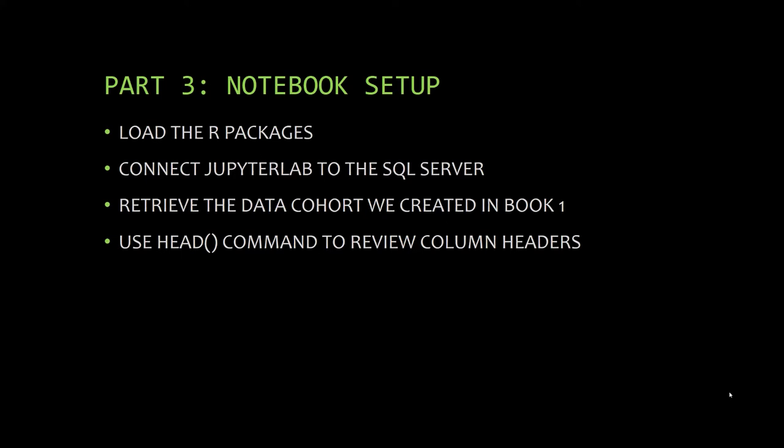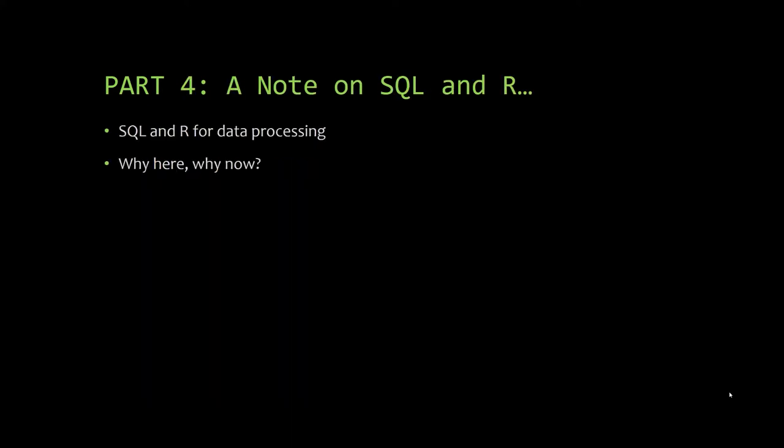Alright, let's get to work. We're in Part 3 of the notebook. We've loaded our R packages and connected Jupyter to the SQL Server. We're going to retrieve the data cohort that we created in Book 1. The last thing we'll do in Section 3 is use the head function to look at the first six rows of data in the cohort. This is an opportunity for you to do a quick review of the column headers in the cohort table. Be sure to read through Part 4 to better understand how the use of SQL and R dovetail with one another to accomplish the tasks completed in this notebook.